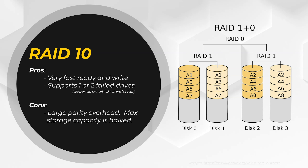There's no such thing as a free lunch, and the cost here is overhead. For the parity in RAID 10 to work, it eats up half of the total possible storage capacity. So if you have 48 combined terabytes, that would reduce to 24 terabytes in RAID 10. It's a bummer, but for the safety and speed it's a worthwhile cost, in my opinion.